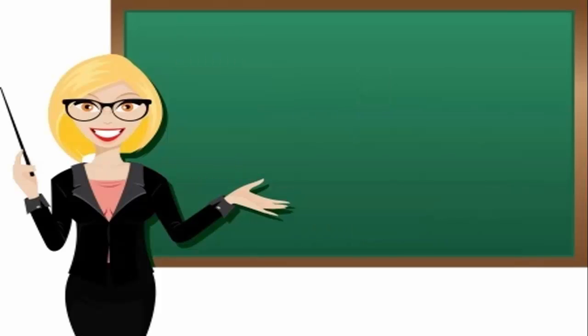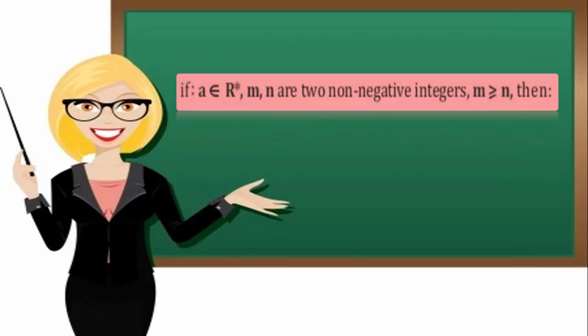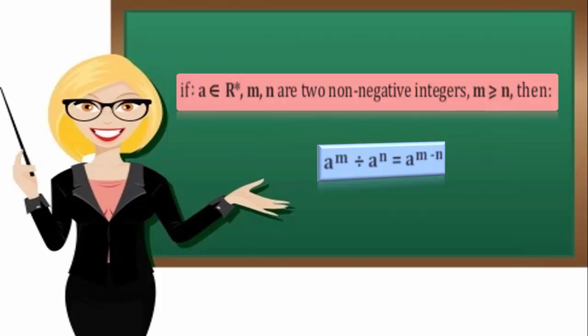Number 2: If A belongs to R star, and M and N are two non-negative integers, and M is greater than or equal to N, then A to the power M divided by A to the power N equals A to the power M minus N.